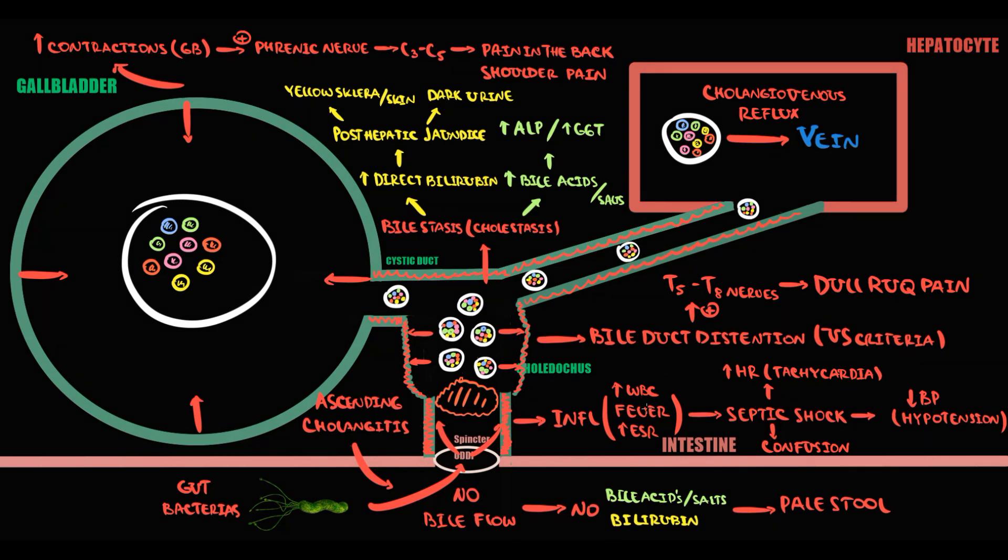Three most common symptoms, which are fever, jaundice, and right upper quadrant pain, we include in the Charcot triad. If septic shock develops, then in addition to these three symptoms, hypotension and confusion develop. Together, these five symptoms form Reynolds pentad.